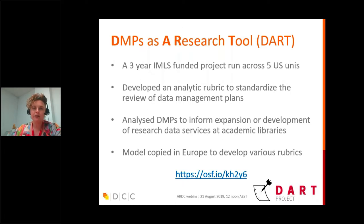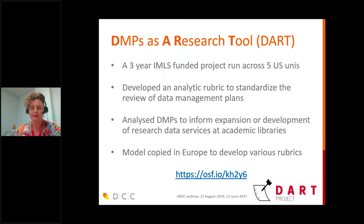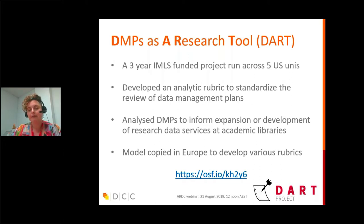Another approach is the DART project in the US — DMPs as a Research Tool — a three-year IMLS funded project. They developed an analytic rubric to review data management plans, looking at what should be covered: what's a good answer, what's a reasonable answer, what's a poor answer, and what gaps need to be addressed. They mined a whole series of DMPs to pull out good and poor examples, and used that to analyse where different research communities were, informing service delivery in different academic libraries. A group of institutions in the UK and across Europe copied this approach, developing evaluation rubrics for various UK and European funders, often used by institutions to review DMPs and give pointers.